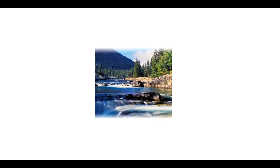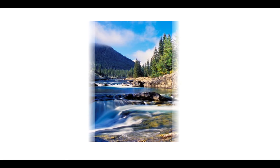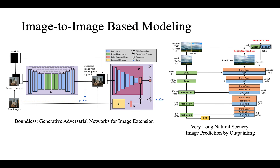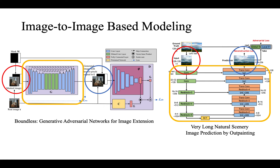So what is image outpainting? Given any image, image outpainting attempts to extend that image in any direction. Previous works handle the task with an image-to-image translation formulation. Image-to-image translation aims to learn the mapping between two visual domains. They set the given image as the source domain, the outpainting image as the target domain, and try to learn a model to perform the translation.